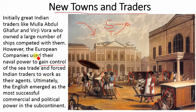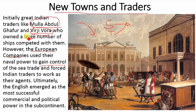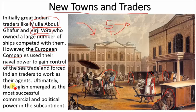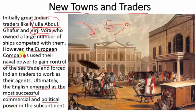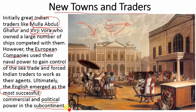There were also great Indian traders at the time, such as Abdul Gafoor and Virji Vora — two very prominent and wealthy traders. However, the English naval force was very advanced and powerful. Ultimately, the English emerged as the most successful commercial and political power in the subcontinent, and the exploitation of Indians followed.